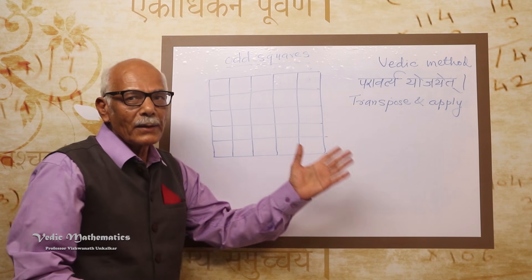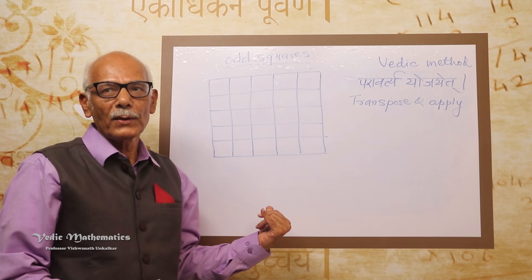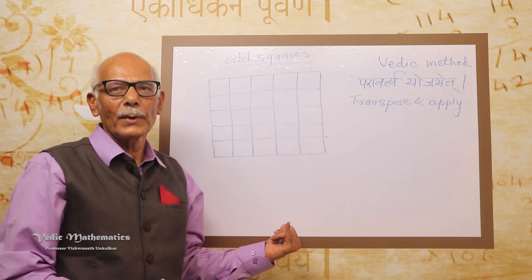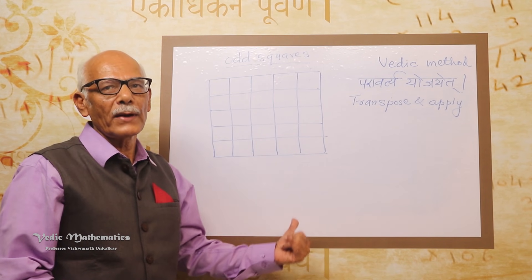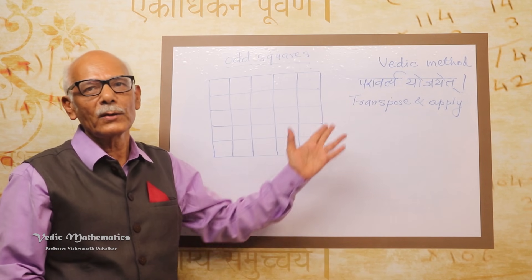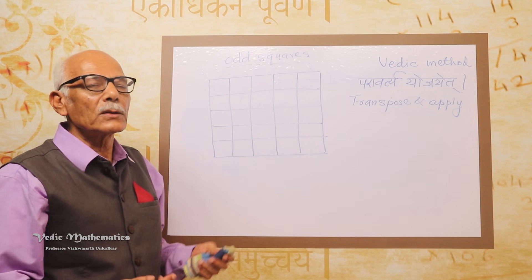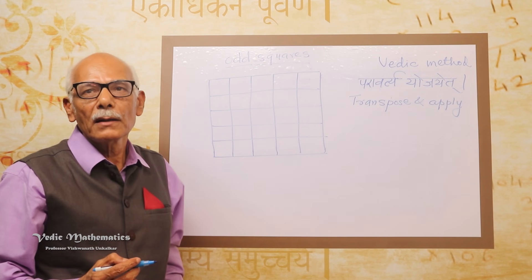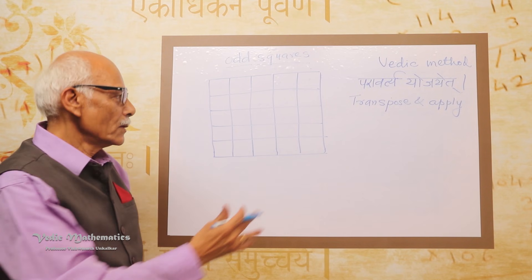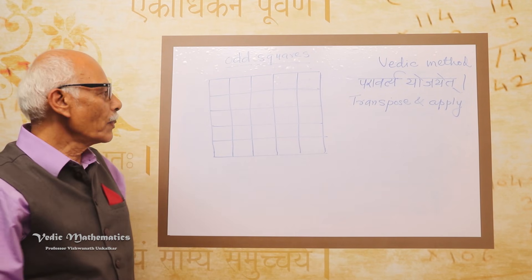After 3 by 3, the 4 by 4 is an even square, 5 by 5 is odd, 6 by 6 is even, 7 by 7 is odd. So 3, 5, 7, 9 — or 3 by 3, 5 by 5, 7 by 7, 9 by 9 — are all odd squares, and there is a common method for writing numbers in them using the same formula, transpose and apply.